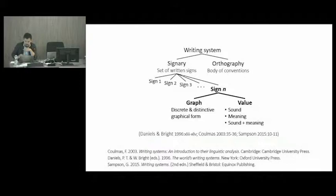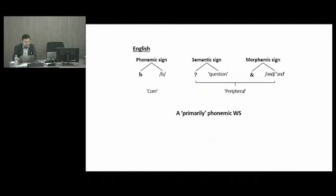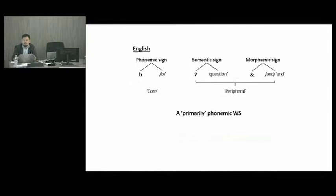It is quite usual for a single writing system to employ different types of signs at the same time. To illustrate with examples from English: we have the letters of the alphabet, most of which represent individual phonemes such as the consonant b. At the same time, the writing system also employs other types of signs — semantic signs, morphemic signs, and other things. However, there seems to be a general agreement that the phonemic signs constitute the core part of the signary, whereas the semantic and other signs are placed in the peripheral place. That's why the English writing system is often, though not always, described as a primarily phonemic writing system.